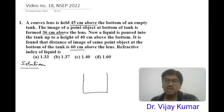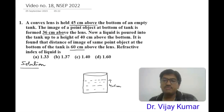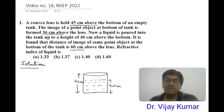Now a liquid is poured into the tank up to a height of 40 centimeters above the bottom. It is found that the distance of the image of the same point object at the bottom of the tank is 60 centimeters above the lens. We have to determine the effective refractive index of the liquid. Let me start the solution — suppose this is a tank with a convex lens, and liquid is filled inside the tank up to 40 centimeters. The total length of the tank is 45 centimeters, and there is an object at the bottom.